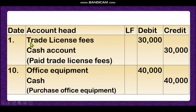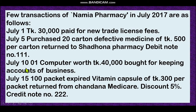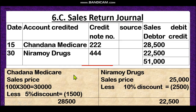July 15: 100 packets of expired vitamin capsules at 300 taka per packet returned from Sandana Medicare. Earlier we supplied goods to Sandana Medicare; now they returned 100 packets because the goods were expired. Discount is 5%. Calculation: sales price is 100 into 300 equals 30,000 taka. Discount is 5%, which is 1,500 taka (30,000 into 5 divided by 100). Therefore, 30,000 minus 1,500 equals 28,500 taka.